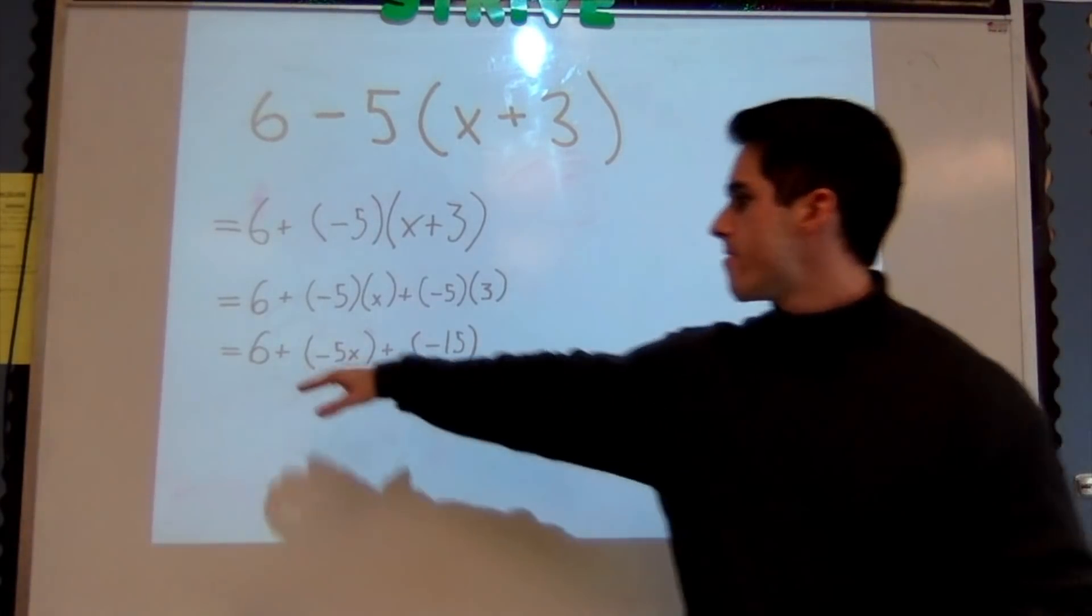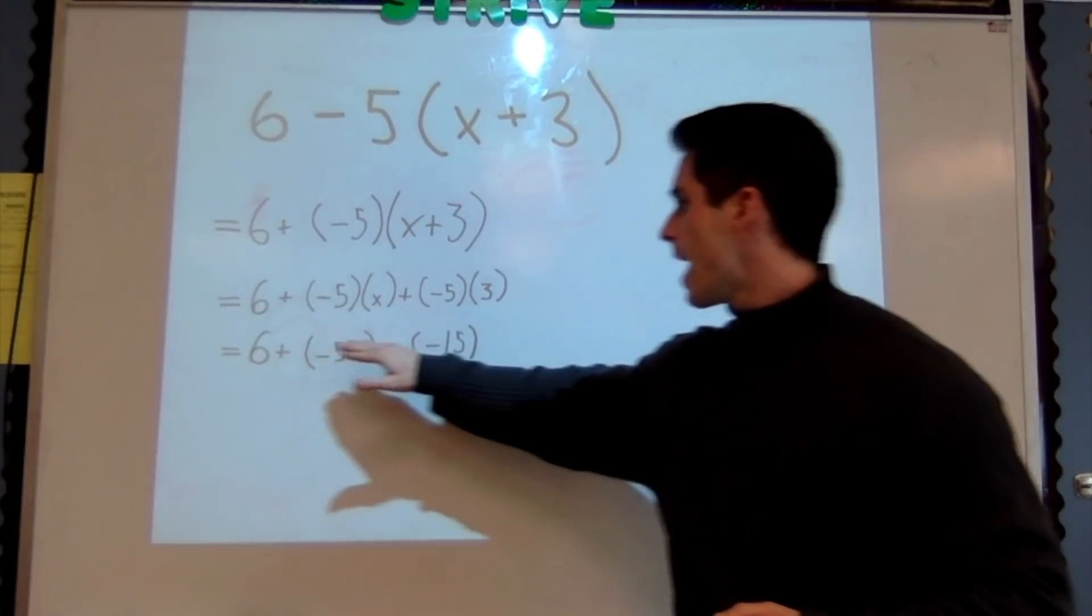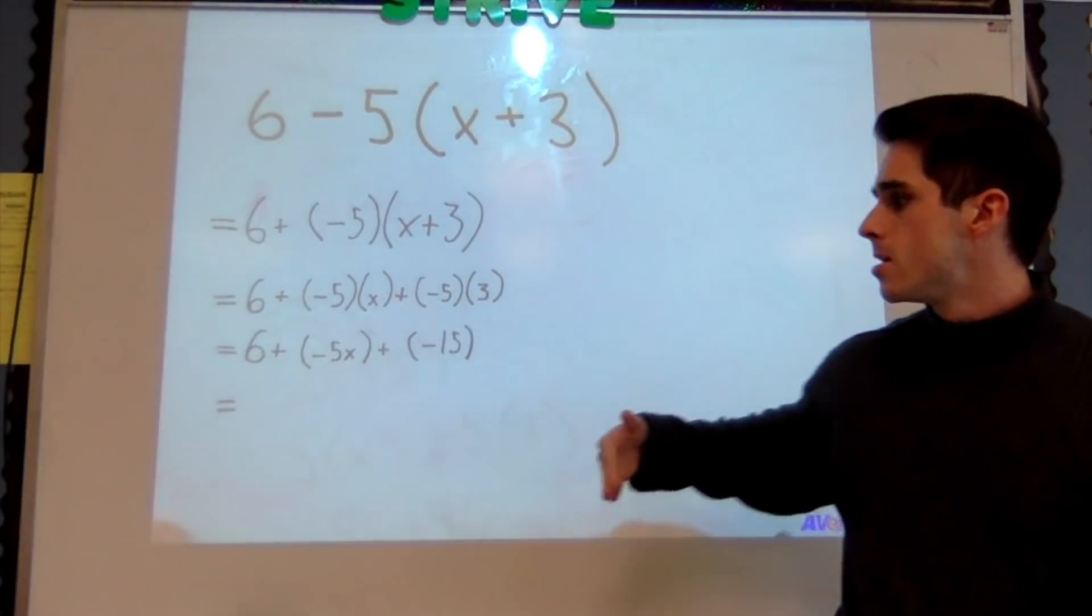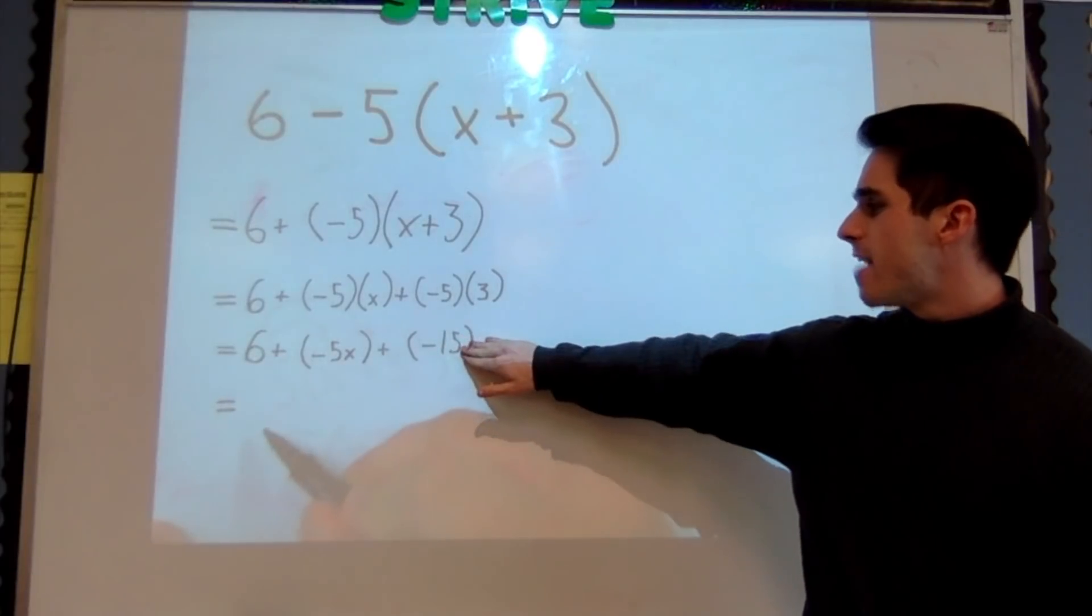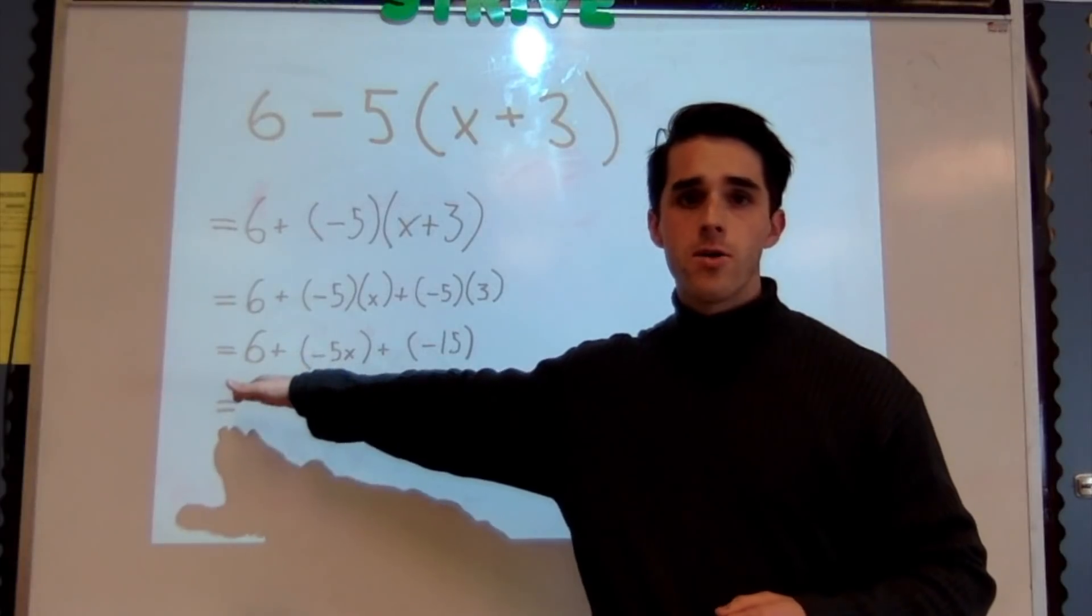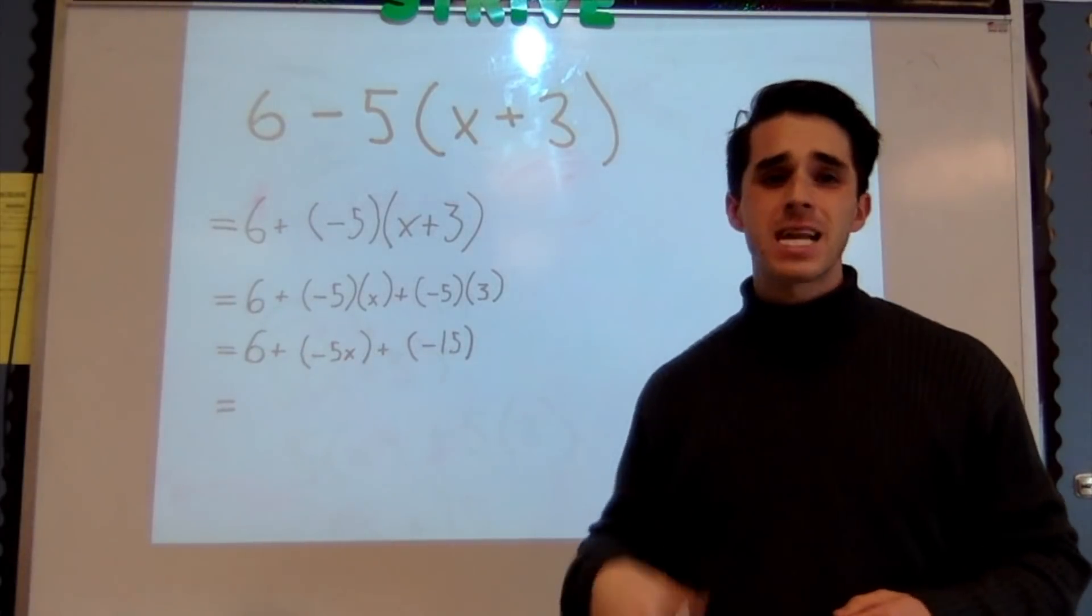Well I have a 6 and a -15. I'm going to combine those. I know that the absolute value of -15 is greater than the absolute value of 6, so when I add 6 and -15 I'm going to get a negative answer.